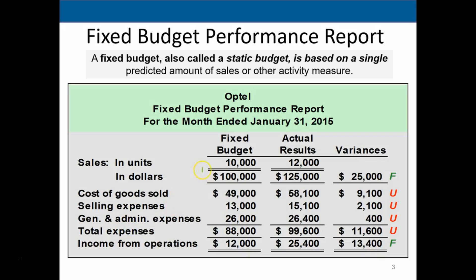In fixed budget terms, we're going to say the fixed budget has 10,000 units — that's how many units we think we're going to produce. If we produce 10,000 units, we're going to get $100,000 in sales. The cost of goods sold is $49,000, selling expenses $13,000, and general and administrative $26,000 — giving us total expenses of $88,000 and a net income of $12,000. That's the budget.